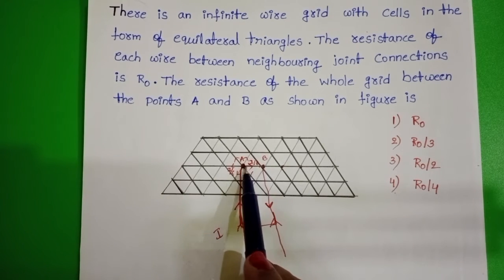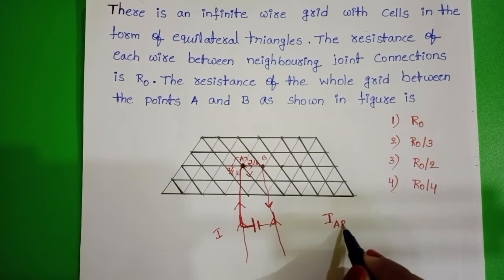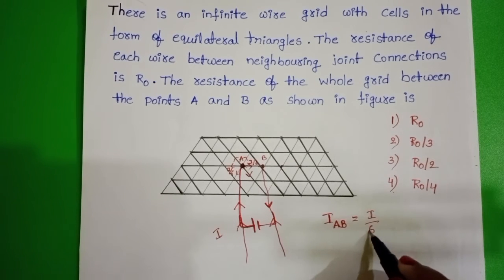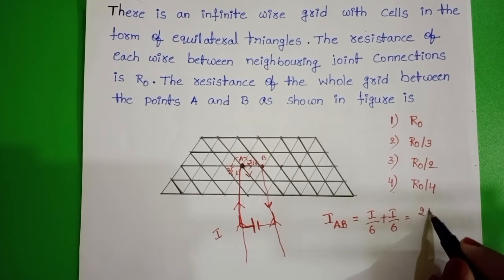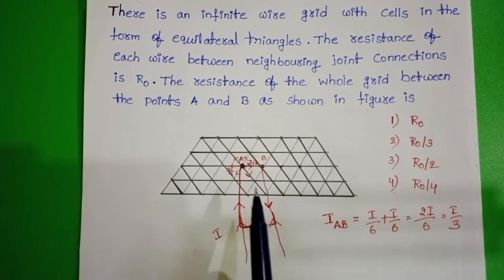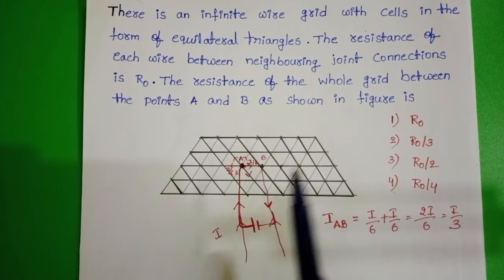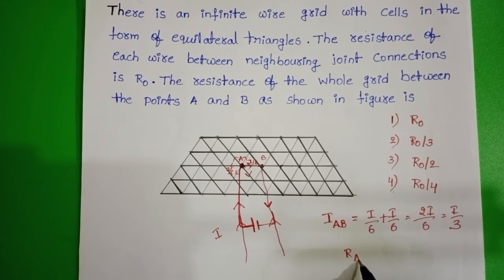Now, what is the current in between A and B? The current IAB is I/6 plus I/6, which equals 2I/6, that is I/3. So the total current in between A and B is I/3. The resistance in between A and B is R0.